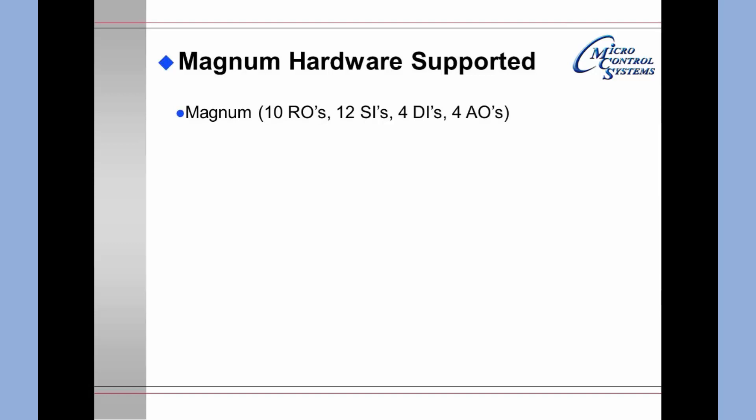The Magnum hardware will support 10 relay outputs, 12 sensor inputs, 4 digital inputs, and 4 analog outputs on the main processor board. The MCS IO board is capable of supporting 8 relay outputs, 8 sensor inputs, and 1 analog output.